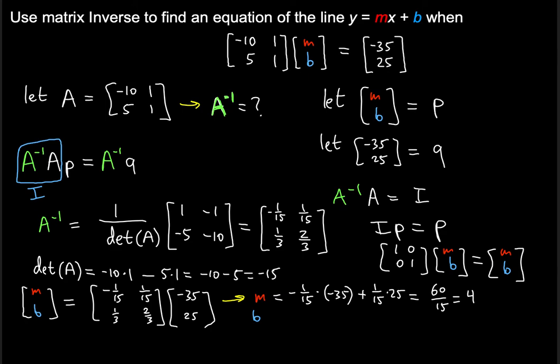Now the y-intercept is done similarly. It's going to be the product of one third and negative 35. If you want to refresh yourselves on matrix multiplication, check out my other videos in the pre-calculus. One third times negative 35 plus two thirds times 25. I'm going to keep the 3 in the bottom. Minus 35 plus 50 is 15 in the numerators. So 15 over 3 is 5.